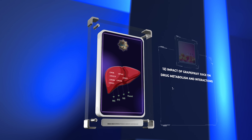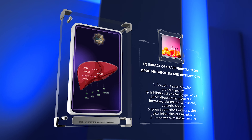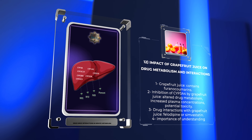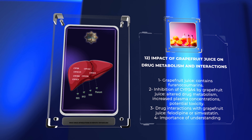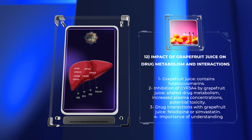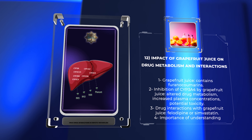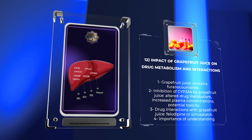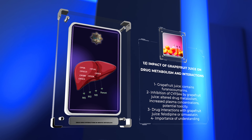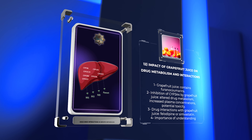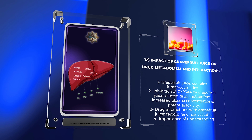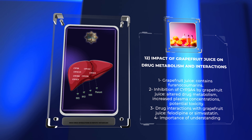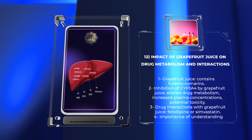Grapefruit juice contains furanocoumarins, compounds that can inhibit the intestinal cytochrome P450 enzymes, particularly CYP3A4. Inhibition of CYP3A4 by grapefruit juice can significantly alter the metabolism of various drugs, leading to increased plasma concentrations and potential toxicity. Patients taking medications like amlodipine or simvastatin should be advised to avoid consuming grapefruit juice to prevent unwanted drug interactions. Understanding the impact of dietary substances like grapefruit juice on drug metabolism is crucial for safe and effective therapy.